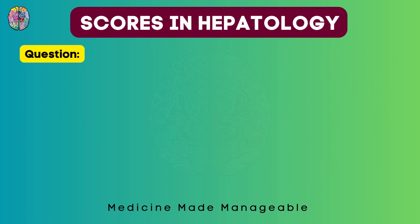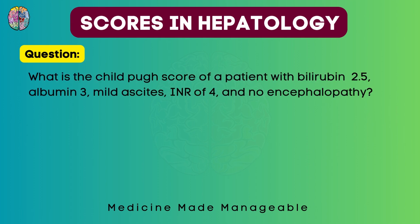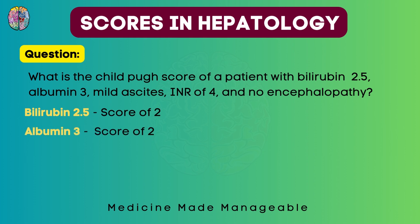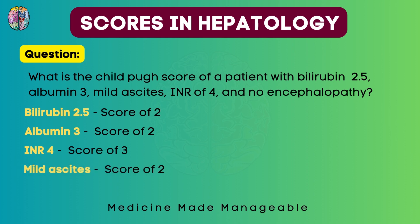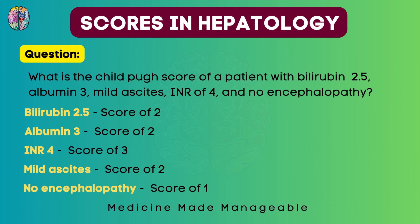Let's attempt a previous year question. We assign a score to each component: bilirubin of 2.5 gives a score of 2; albumin of 3 gives a score of 2; INR of 4 gives a score of 3; mild ascites means controlled ascites, giving a score of 2; and no encephalopathy gives a score of 1. Adding all of these gives a total of 10, which means Class C. This is how we solve these types of questions.